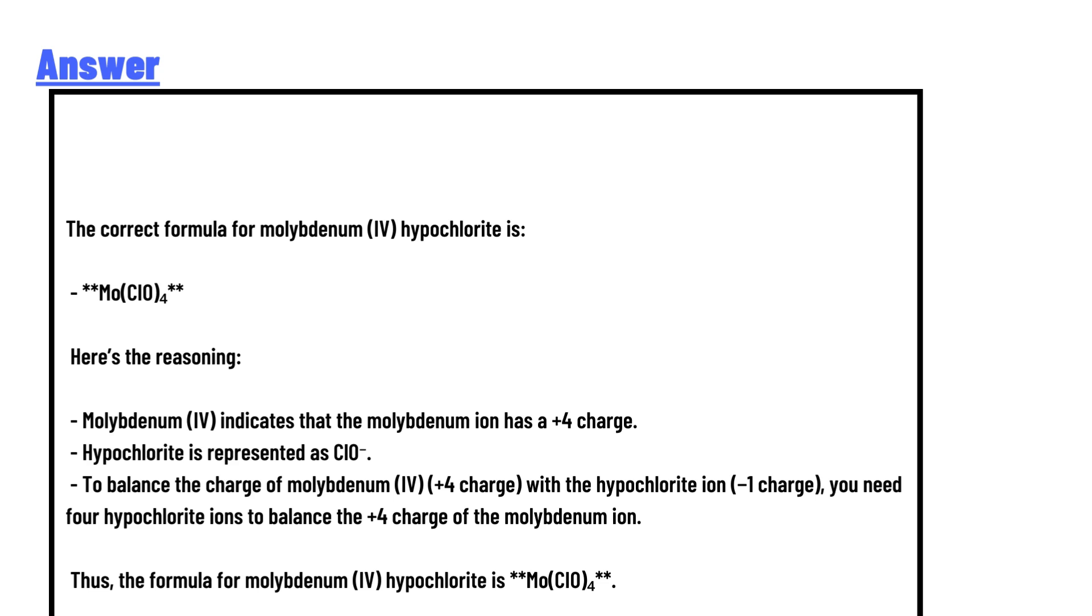+4 charge with the hypochlorite ion, you need four hypochlorite ions to balance the +4 charge of the molybdenum ion. Thus, the formula for molybdenum (IV) hypochlorite is Mo(ClO)4.